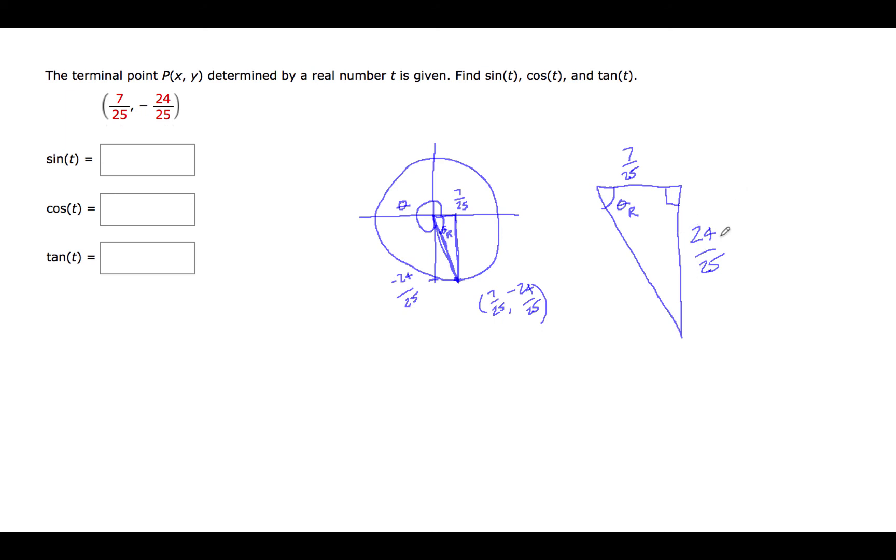When we find the sine, cosine, and tangent, what we will do is find the sine, cosine, and tangent for this reference angle. And then consider the fact that the terminal side is in the fourth quadrant, and that the sine is negative in the fourth quadrant, the cosine is positive, and the tangent is negative.